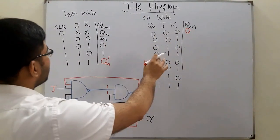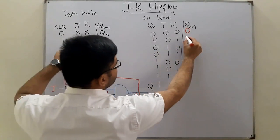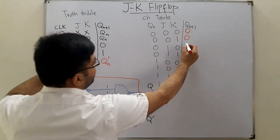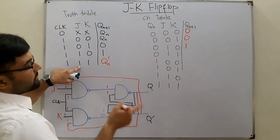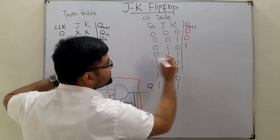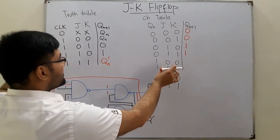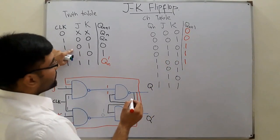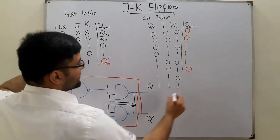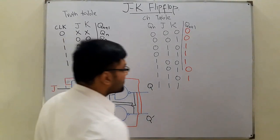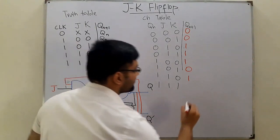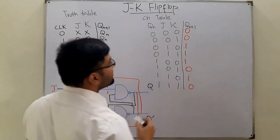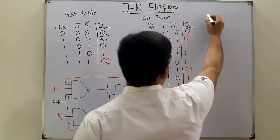When Q-n is zero and J-K is zero-one, the next state is zero. When J-K is one-zero, the next state is one. When J-K is one-one, it complements: if Q-n was zero, the next state is one. For Q-n equal to one: J-K zero-zero retains memory, zero-one gives zero, one-zero gives one, and one-one gives the complement, so next state is zero.